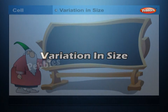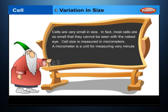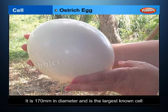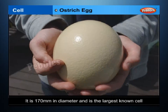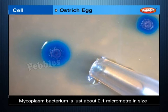Variation in Size. Cells are very small in size. In fact, most cells are so small that they cannot be seen with the naked eye. Cell size is measured in micrometers. A micrometer is a unit for measuring very minute lengths. An ostrich egg is made up of a single cell; it is 170 micrometers in diameter and is the largest known cell. On the other hand, a mycoplasma bacterium, a unicellular organism, is just about 0.1 micrometers in size.